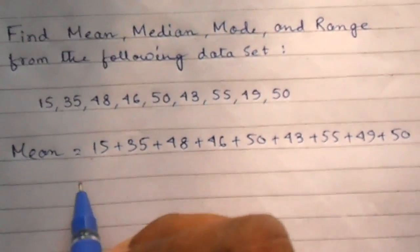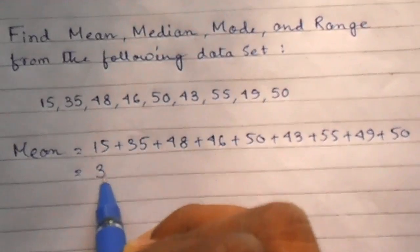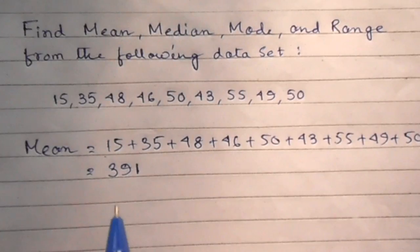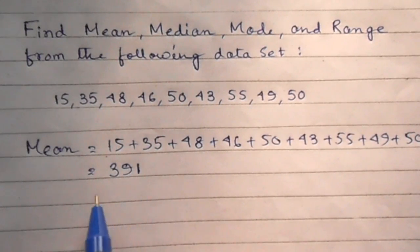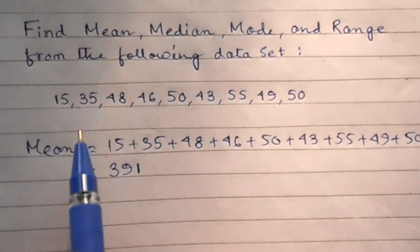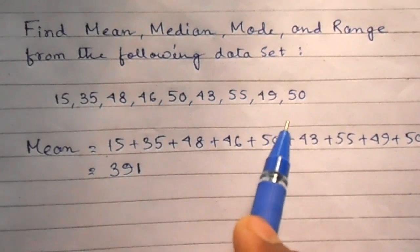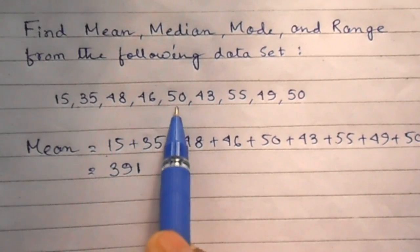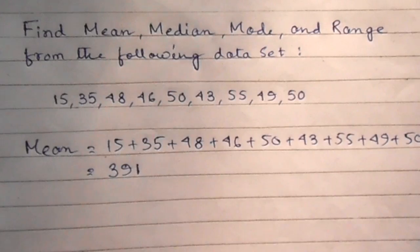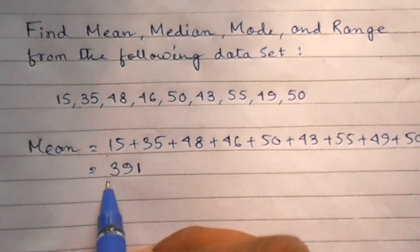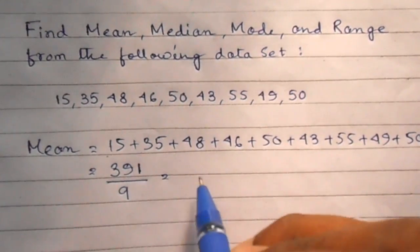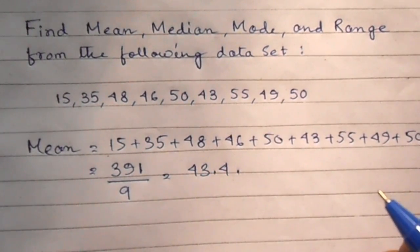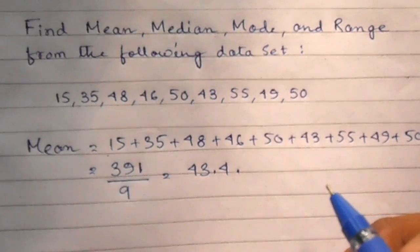That is equal to 391. So 391 is to be divided by how many numbers contained in the data set. That is 1, 2, 3, 4, 5, 6, 7, 8, 9. So 391 by 9 equal to 43.4. The mean is 43.4.